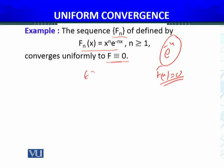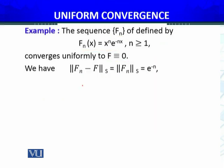For uniform convergence, I need to consider the supremum. We have ||F_n - F||_s. Since F = 0, this equals the supremum of F_n. The supremum, the maximum value over S, equals e^{-n}, which we already calculated.